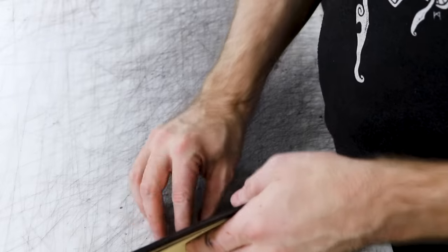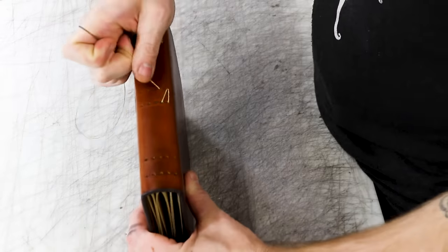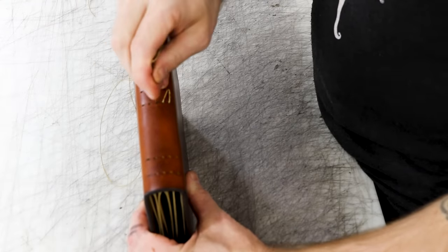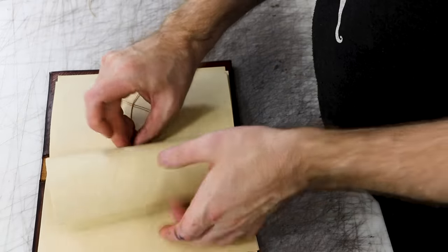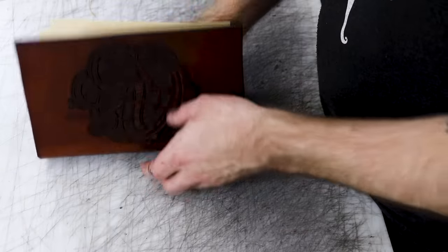Now the one thing that I don't end up doing on this book is any kind of closure or wrap around the book. You can experiment with different things. A lot of people will stitch a half-inch, three-quarter inch wide strip of leather into the spine, and then it just wraps around the book and closes it.